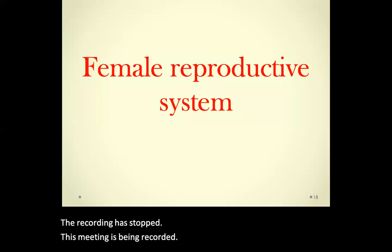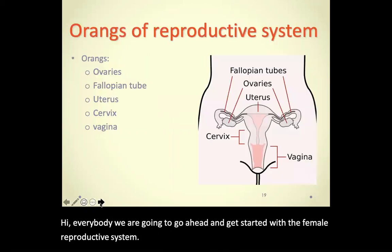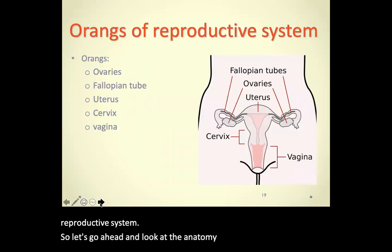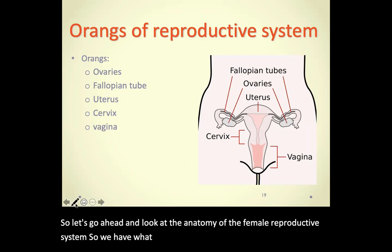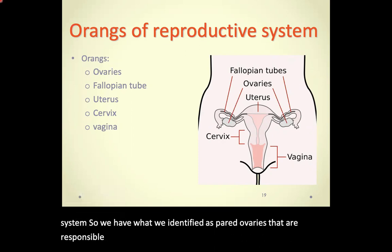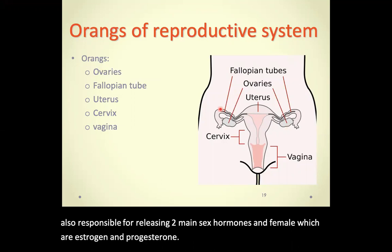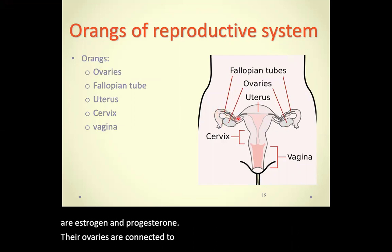We are going to get started with the female reproductive system. Looking at the anatomy, we have paired ovaries that are responsible for production of the oocyte, or egg, and they are also responsible for releasing two main sex hormones in females, which are estrogen and progesterone.